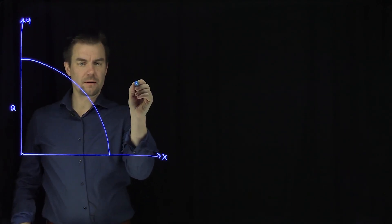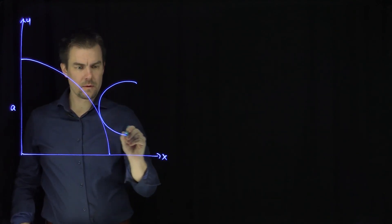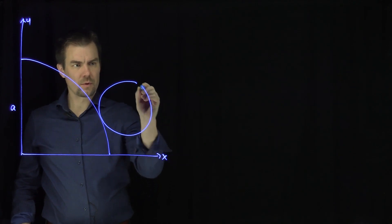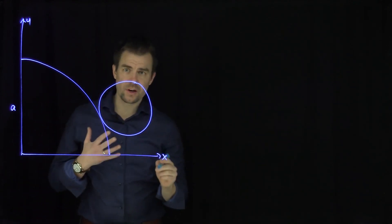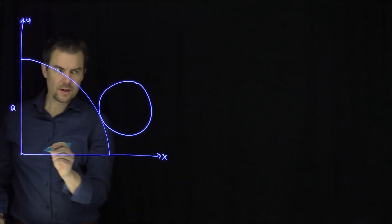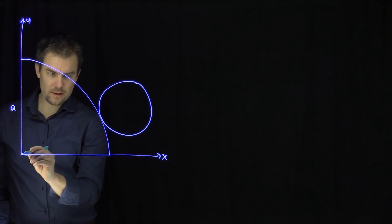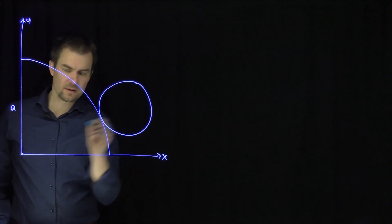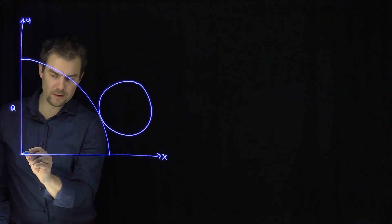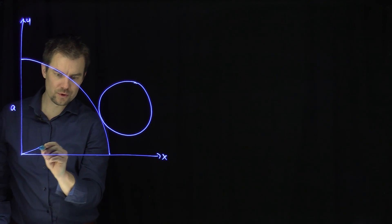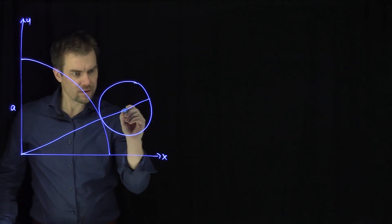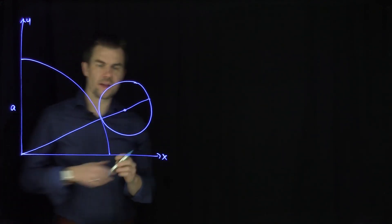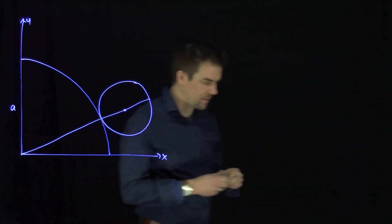Then I have a circle of radius b that's rolling along the outside of this circle. If I draw a line theta that goes between the center of this, through the center of the small circle, from the origin over here, through the center of the circle over here, then a point on this epicycloid will satisfy a relationship.